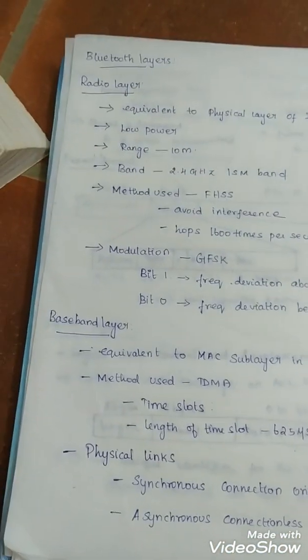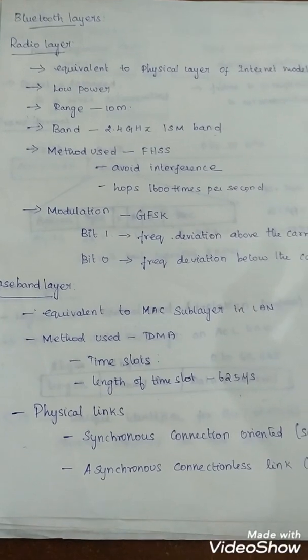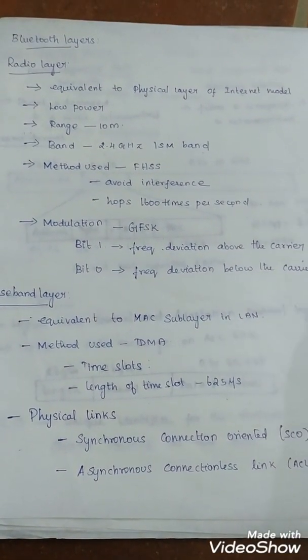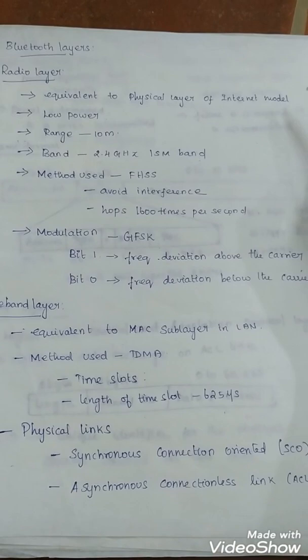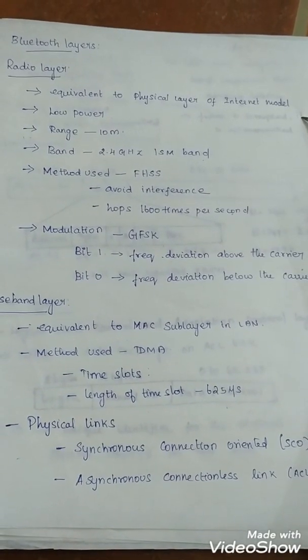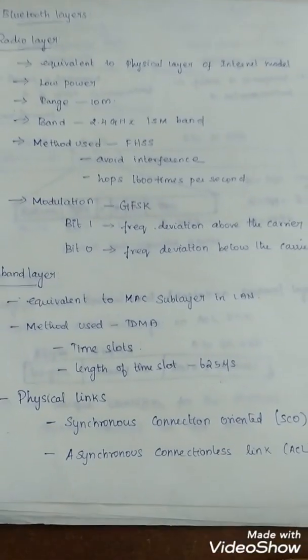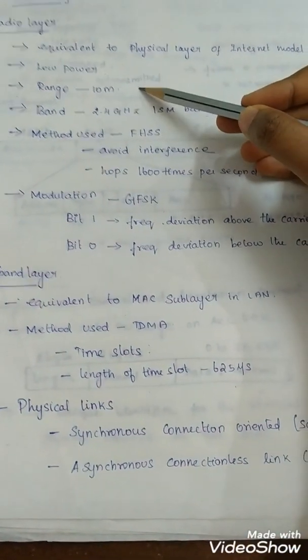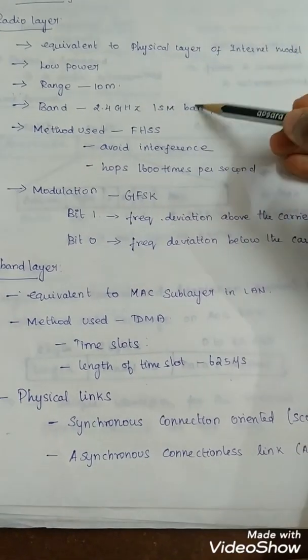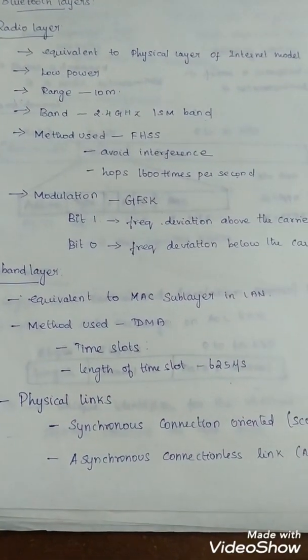Next one: Bluetooth layers. The first one is radio layer. It is equivalent to the physical layer of internet model. Bluetooth devices are low power and range. It covers a range of 10 meters. The band is 2.4 GHz band.